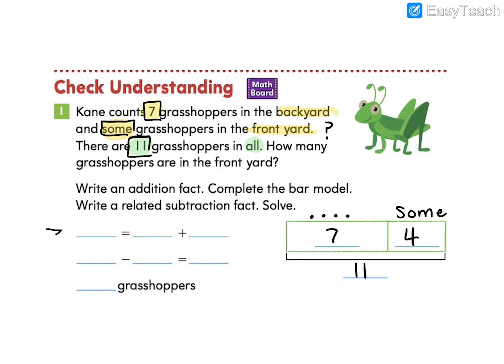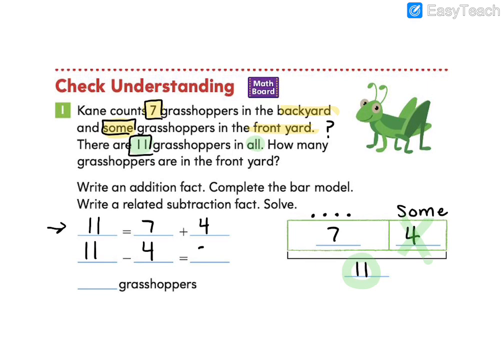Let's write our related addition, our addition fact. We know our whole is 11, which is equal to seven plus four. If you didn't write your subtraction fact, go ahead and write it now. You might have written 11 minus four equals seven. You could have also written 11 minus seven equals four. So how many grasshoppers are in the front yard? There are four grasshoppers.